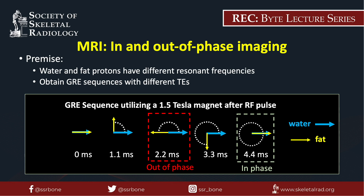Water and fat protons have different resonance frequencies. At different echo times, the signals from water and fat will vary. With a 1.5 tesla magnet, at 2.2 ms, water and fat will be out of phase and will result in a drop in signal if both water and fat coexist within the voxel. At 4.4 ms, water and fat will be in phase. The TEs for in-and-out phase imaging will differ for different field strength magnets.